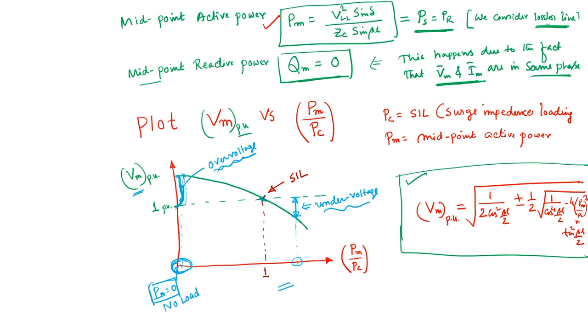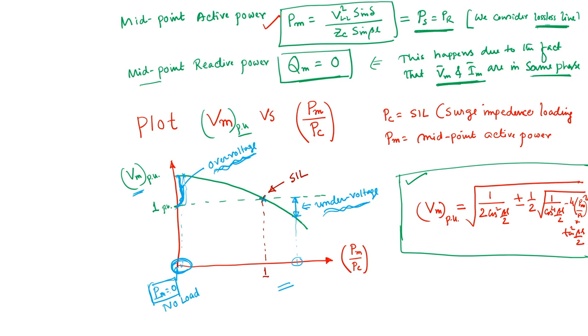Both undervoltage and overvoltage require mitigation through compensators. Compensators not only handle steady-state over/undervoltage but also help during dynamic loading and contingency conditions. The primary goal in steady state is to mitigate overvoltage under light loading and undervoltage under rated loading conditions.